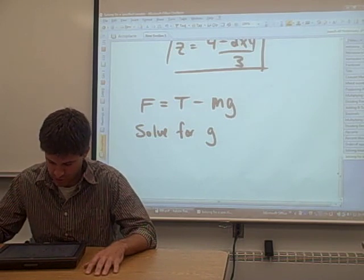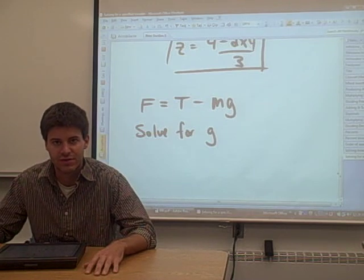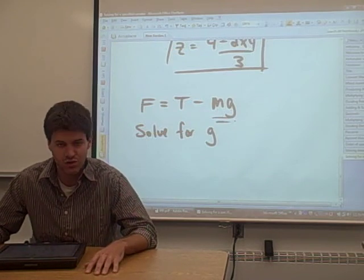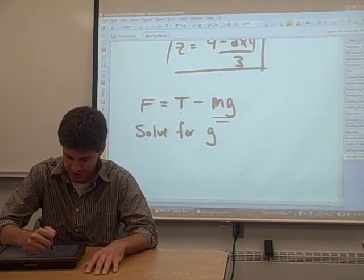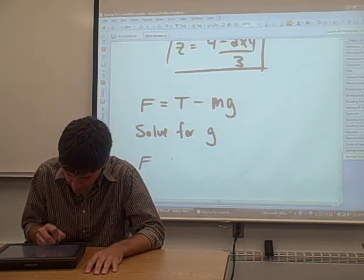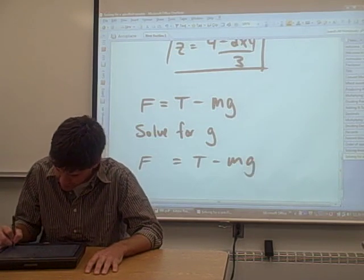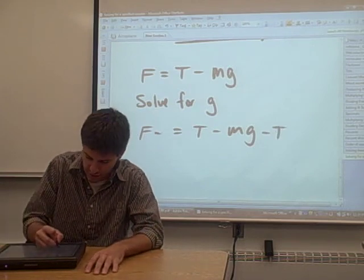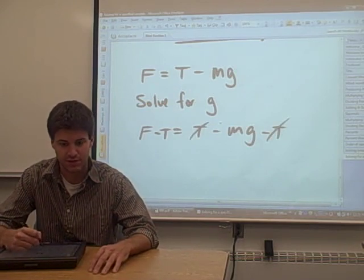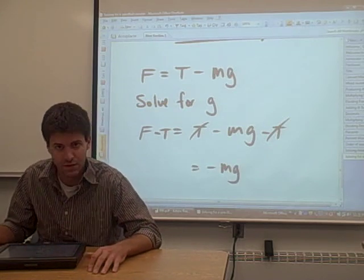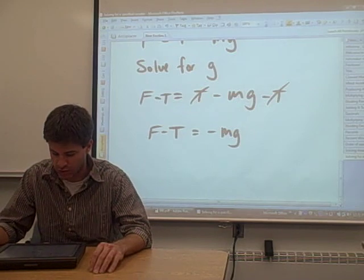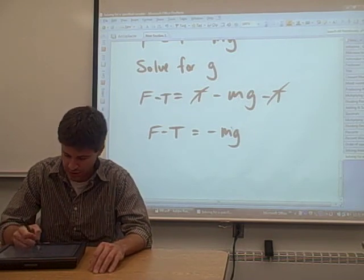All right, let's do it. So we want to solve for g, so we need to get all the terms with a g in them on one side of the equation. It looks like there's only one term that has a g in it. What we can do is take the t and move it over to the other side of the equation by subtracting t from both sides. The t's cancel from the right side, and we're left with just the term with g in it on the right side. On the left side, we just get f minus t.